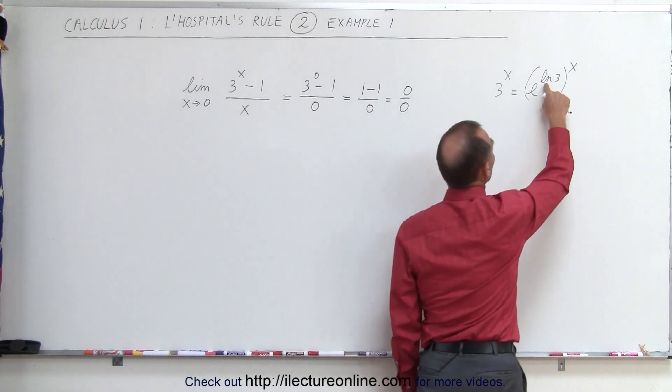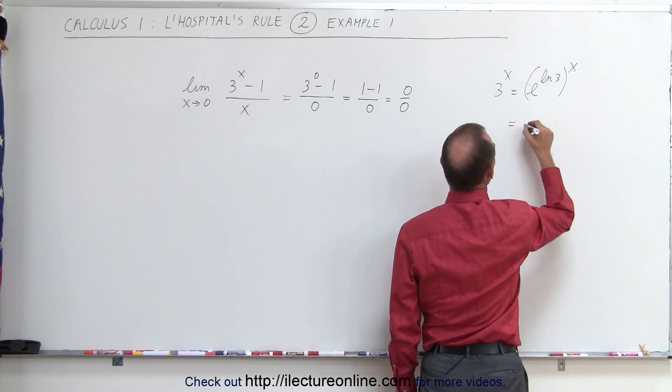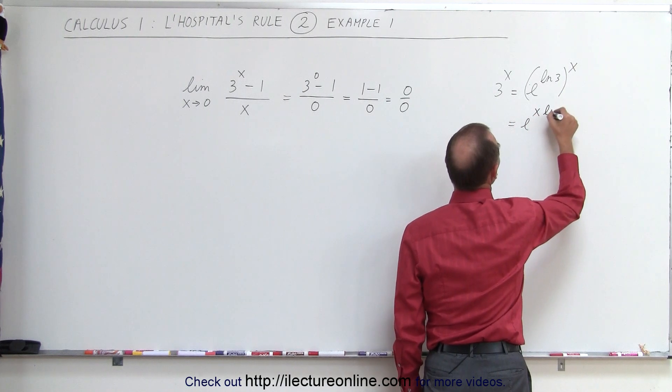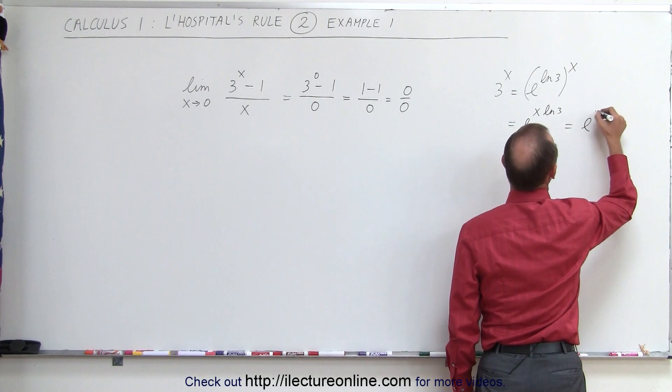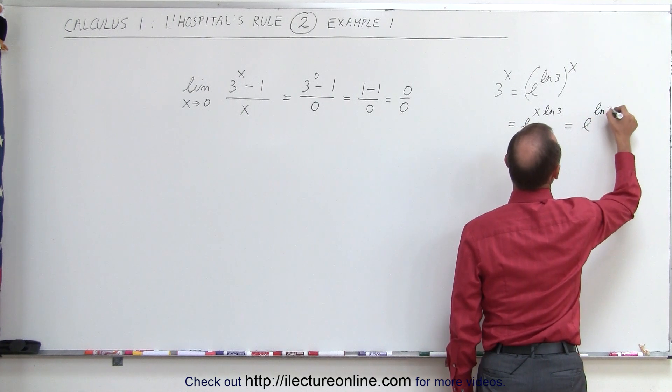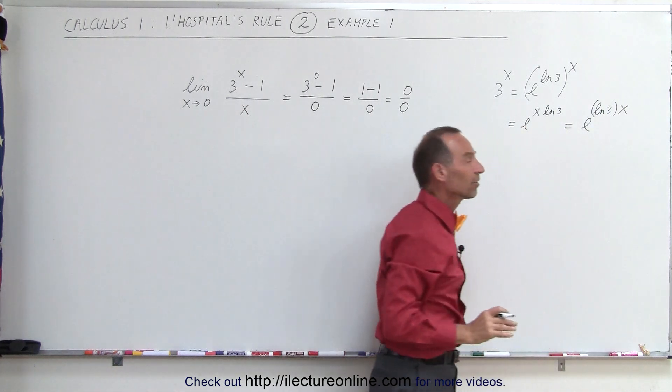This is simply a different way of writing it. Whenever we have an exponent raised to another exponent, that's the same as multiplying. This can now be written as e to the x times the natural log of 3, or we probably prefer to write it as e raised to the natural log of 3 times x. This now becomes the coefficient of the variable x.